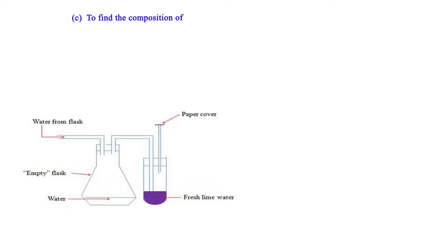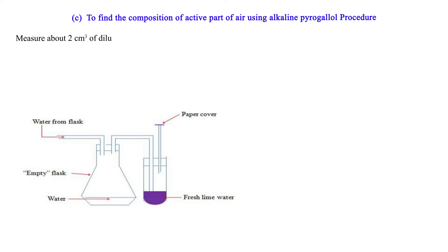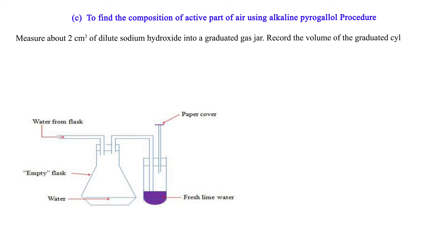To find the composition of the active part of air using the alkaline pyrogallol procedure. Measure about 2 cm³ of dilute sodium hydroxide into a graduated gas jar. Record the volume of the graduated cylinder, V1.